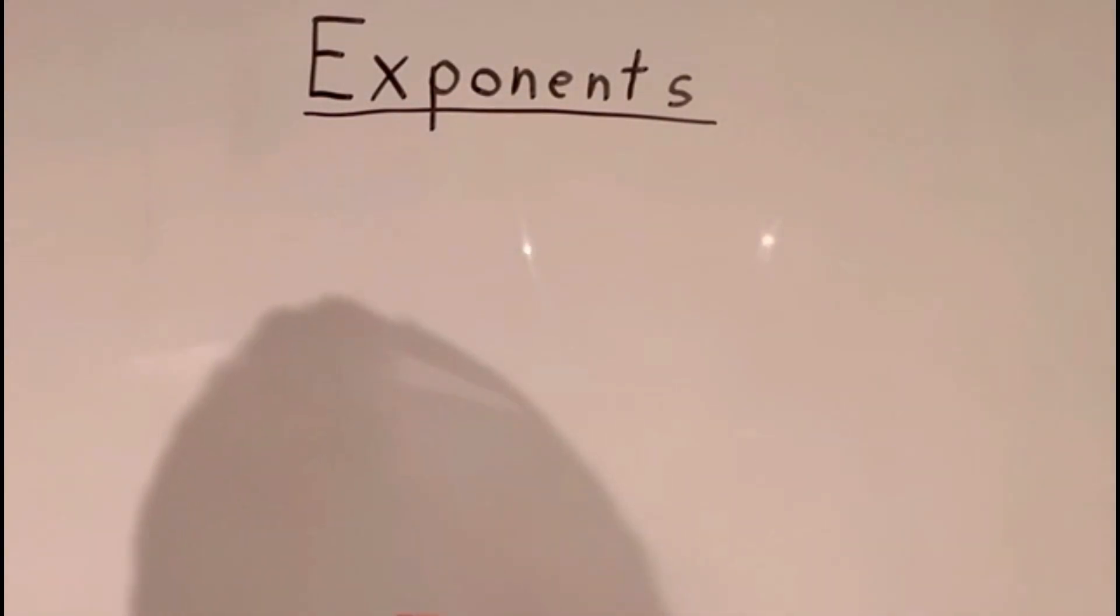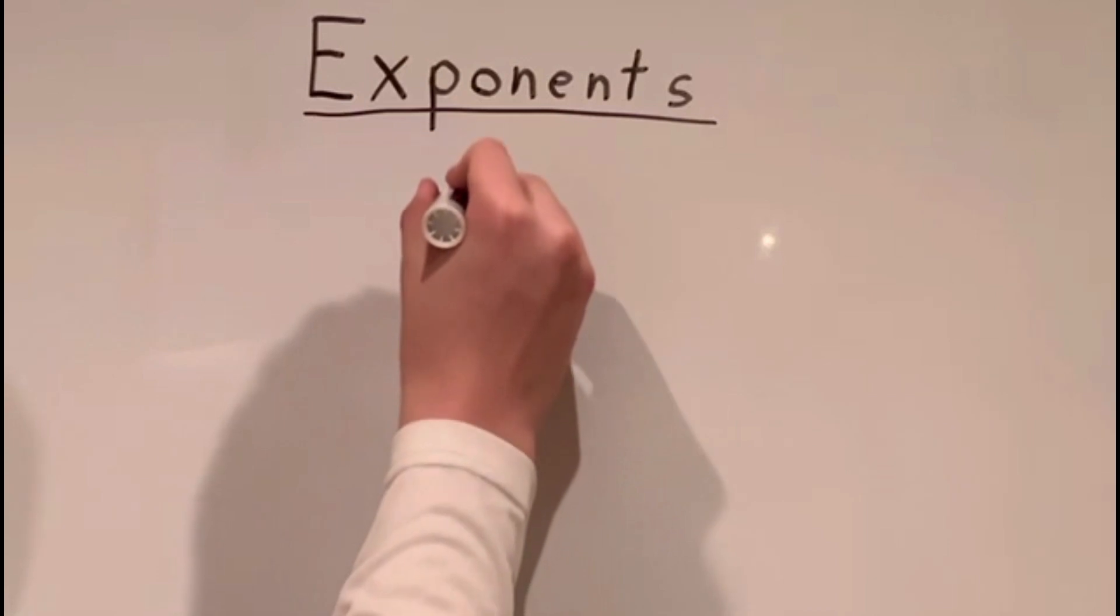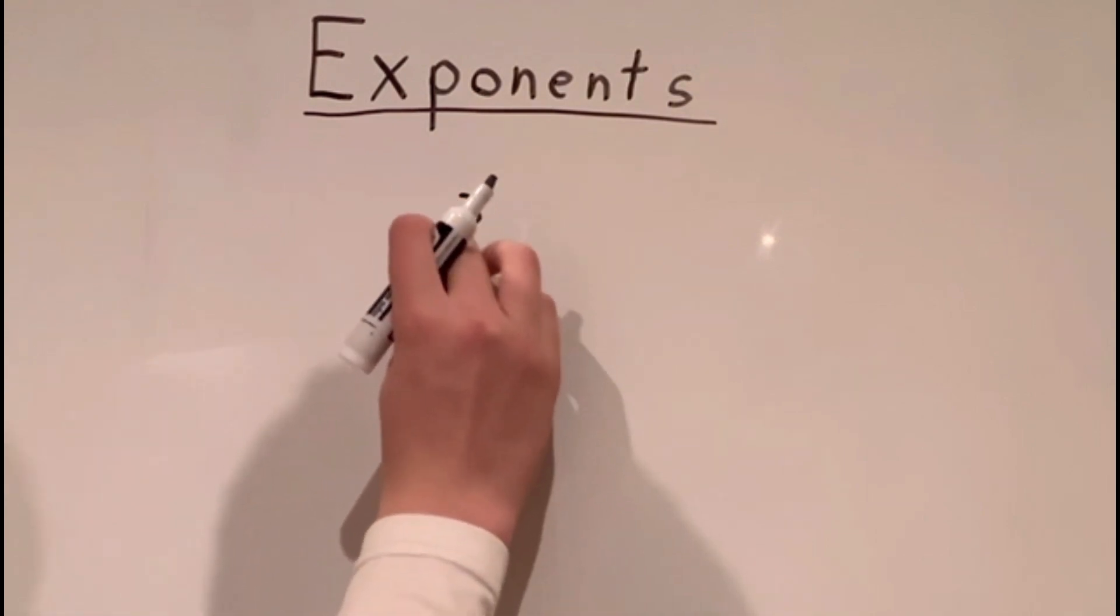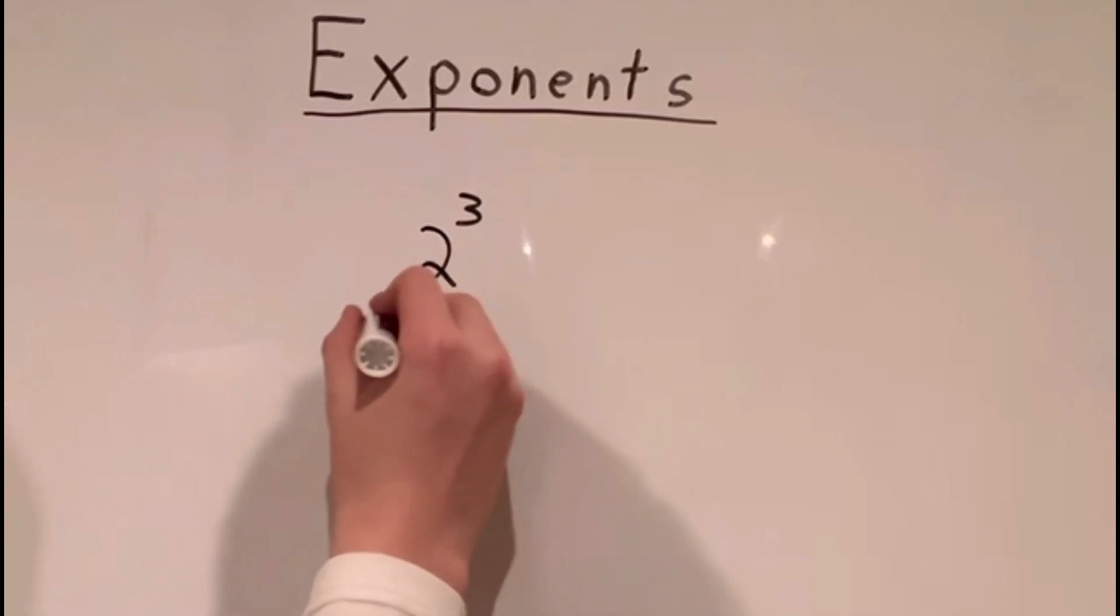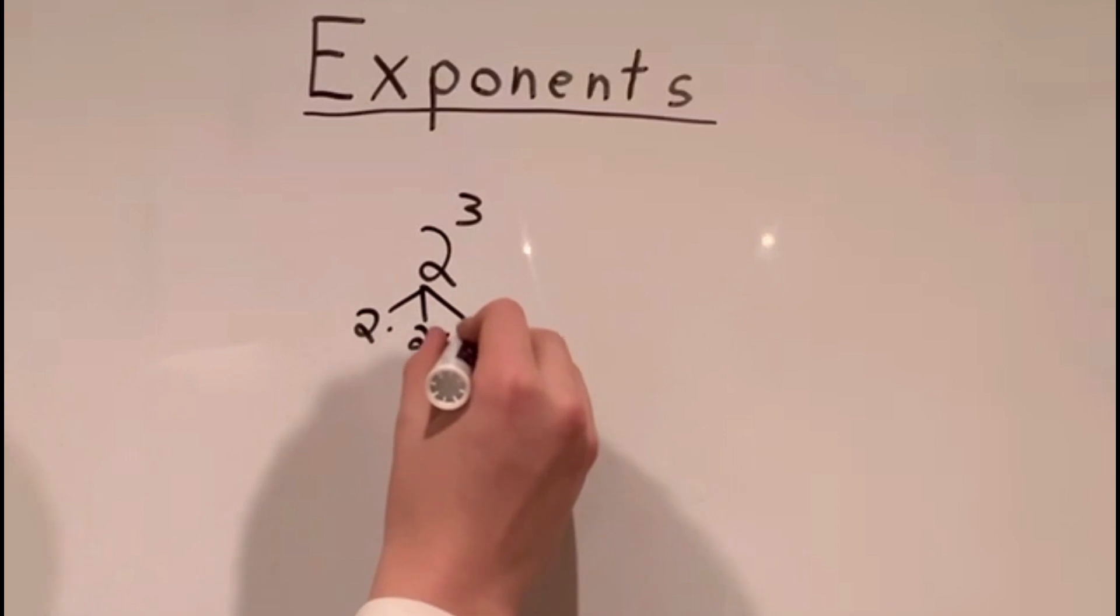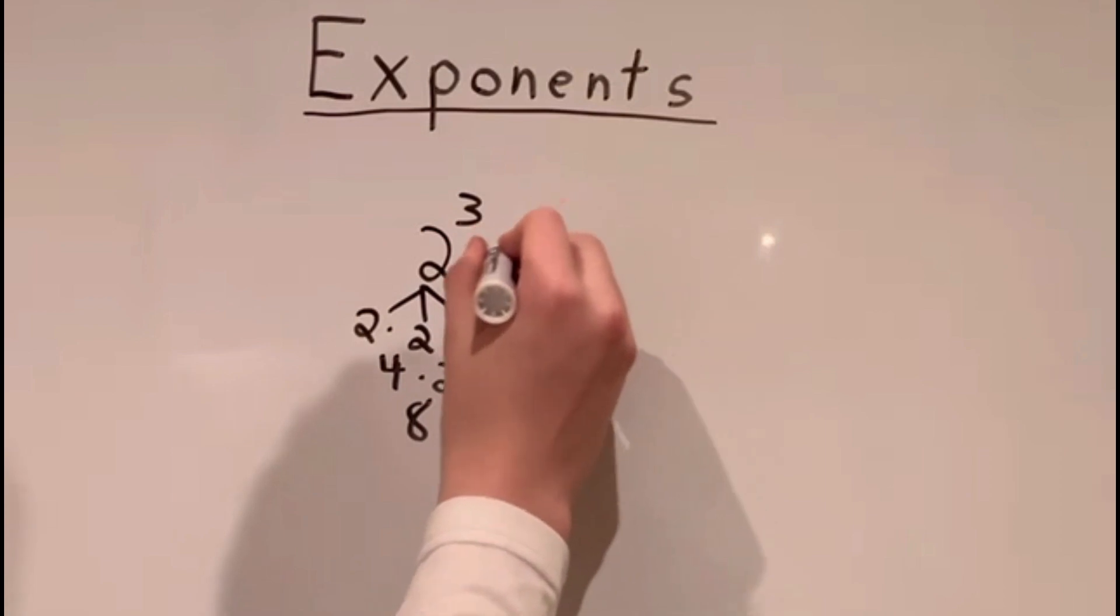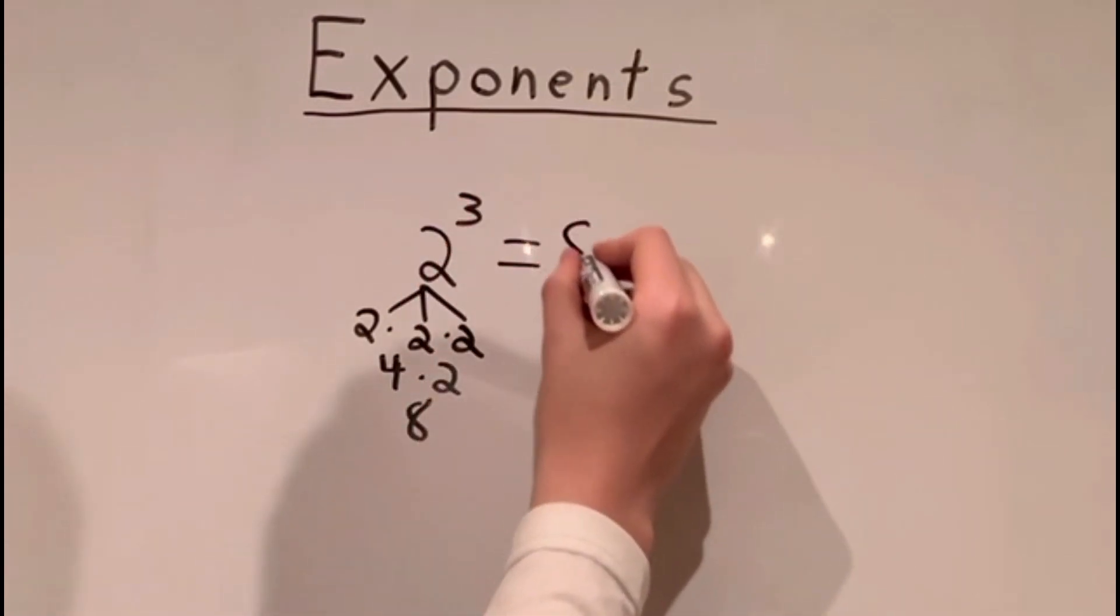Now let's try a more tricky one. Let's do 2 to the power of 3. This is 2 times itself 3 times. That would mean we have 2 times 2 times 2. There's 3 twos here. Now we have to multiply these together, which 2 times 2 equals 4, and then times 2 equals 8. 8 would be our answer. So 2 cubed, or 2 to the power of 3, equals 8.